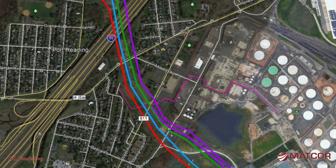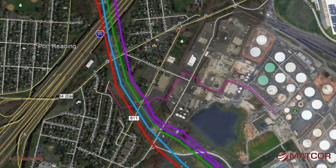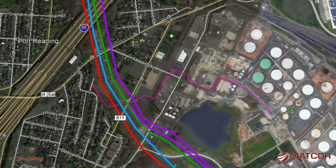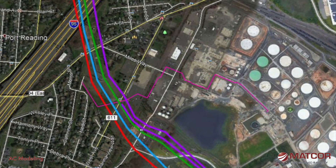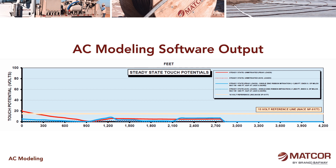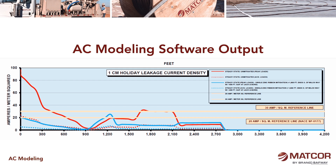Here's an example of a model where you've got multiple high voltage transmission lines and a pipeline going from one location out to a terminal. We have to model each one of those AC lines and the pipeline's characteristics. Ultimately the output shows you along the length of the pipeline those areas of concern — steady state touch potentials for safety above 15 volts, one-centimeter holiday leakage current for AC induced corrosion, and areas where fault currents can exceed the maximum allowable for coating stress.